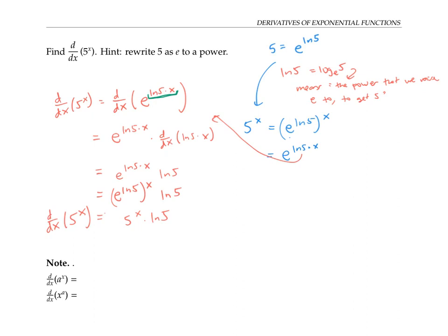This same argument works not just for the base five exponential function, but for any base. So if I take the derivative with respect to x of a to the x, for any number a, I get a to the x times ln a.